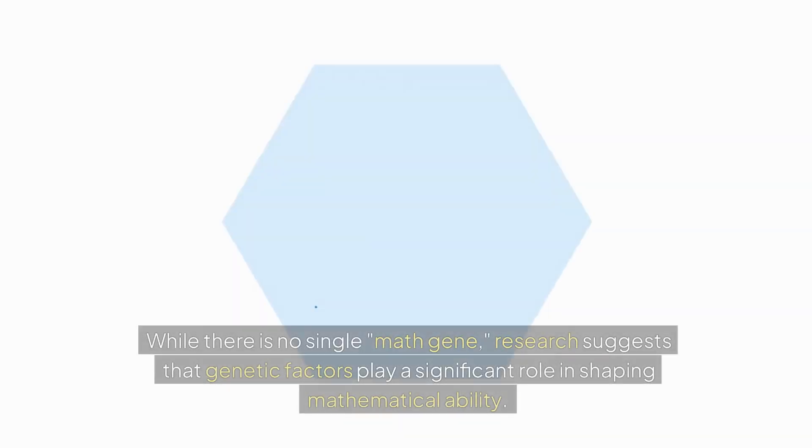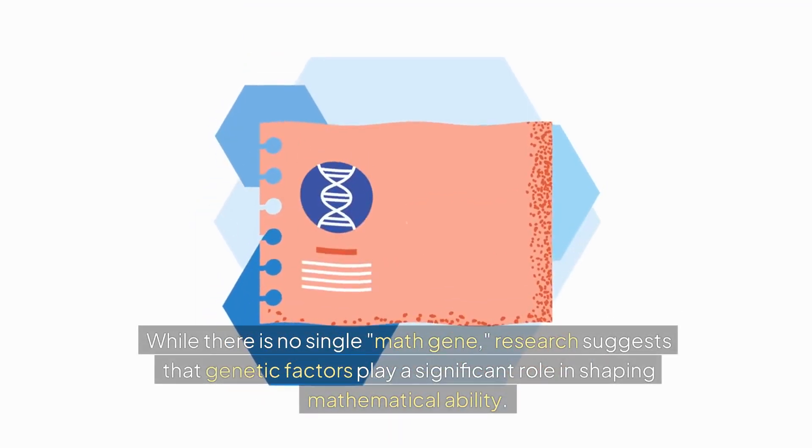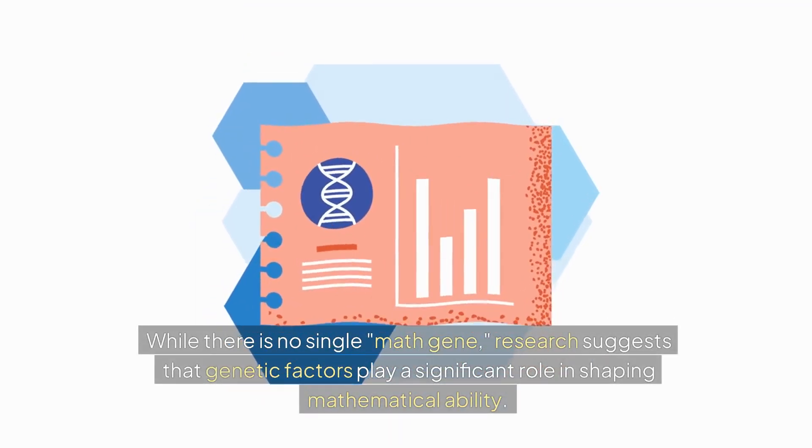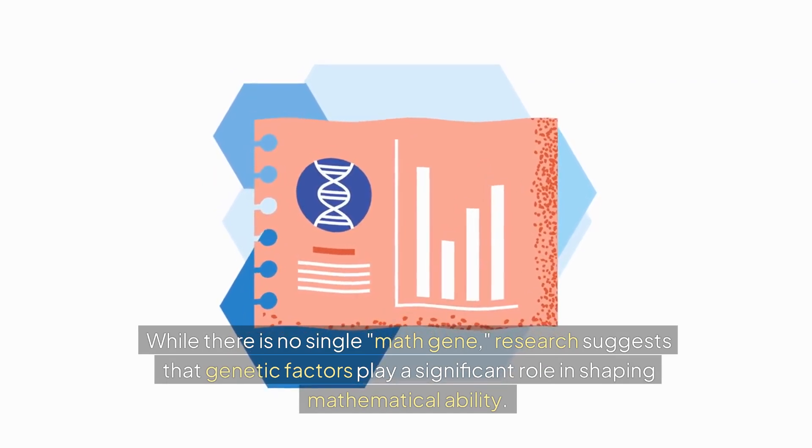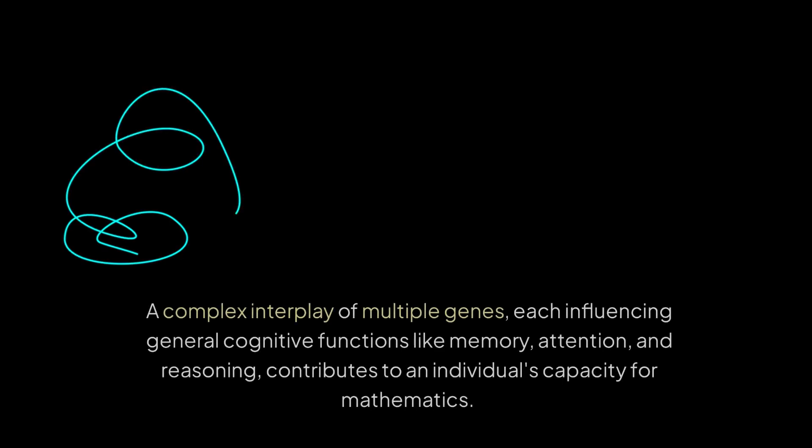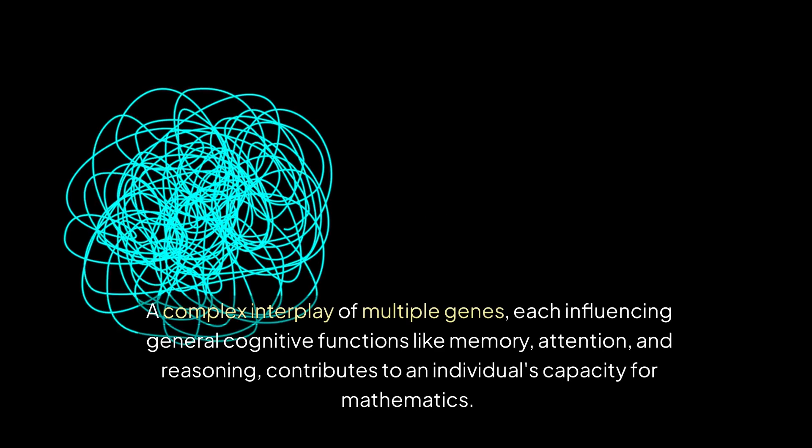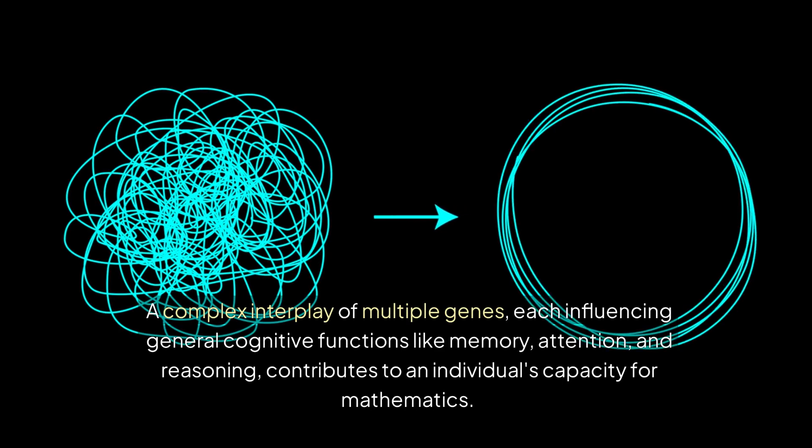Conclusion: While there is no single math gene, research suggests that genetic factors play a significant role in shaping mathematical ability. A complex interplay of multiple genes, each influencing general cognitive functions like memory, attention, and reasoning, contributes to an individual's capacity for mathematics.